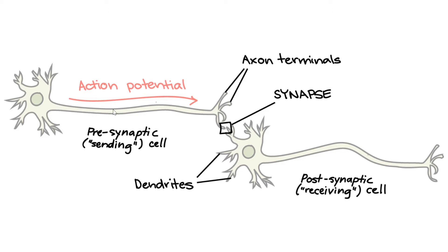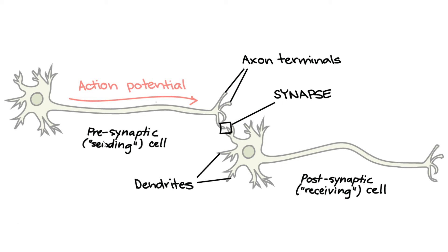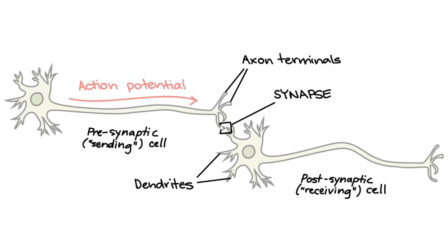The electrical signal — the action potential — travels all the way down, and when it gets to the end, it becomes a chemical signal via neurotransmitters, which then triggers the electrical action potential in the next neuron. When it gets to that neuron's end, it releases more neurotransmitters as a chemical signal again. The presynaptic neuron is the one sending the signal; the postsynaptic neuron is receiving it. The presynaptic neuron secretes neurotransmitters, which bind to the postsynaptic neuron and cause an effect.